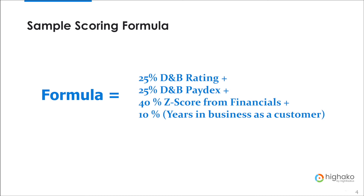This is just an example of a formula where we are relying heavily on external data and very little on internal data. One place where you could use this model is when it's a pretty new customer — you don't have much internal information, so you can rely more on external agency data. However, if a customer has been doing business with you for a longer time, you would switch over and rely more on internal data and less on external agency data. The main thing to note: don't treat all your customers in exactly the same way — look at the size of the customer, how long they've been doing business with you, what kind of data is available, and then come up with a scoring model.